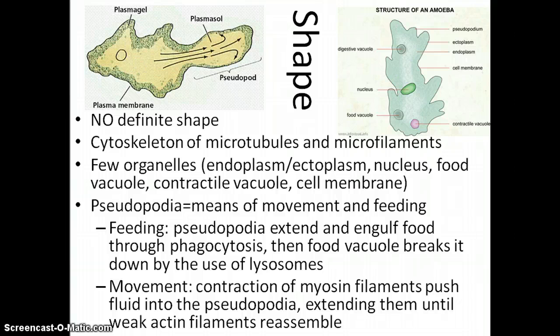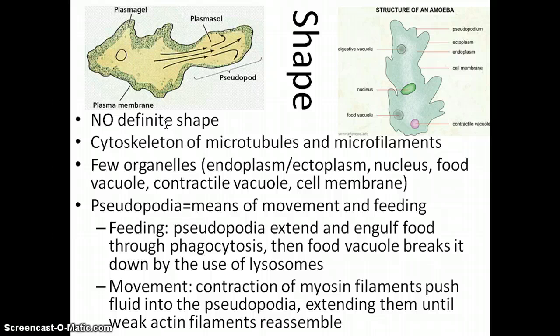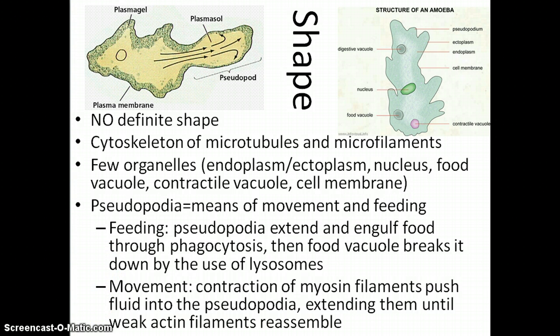In the process of movement, the contraction of myosin filaments pushes the fluid of the amoeba into the pseudopodia, where they extend until the weak actin filaments reassemble into a network and pull the whole blob just a step closer. That can be referred to as a crawling mechanism.